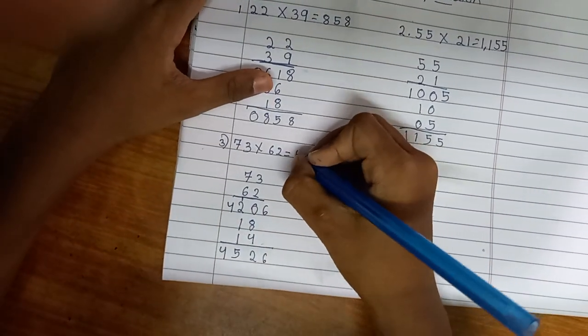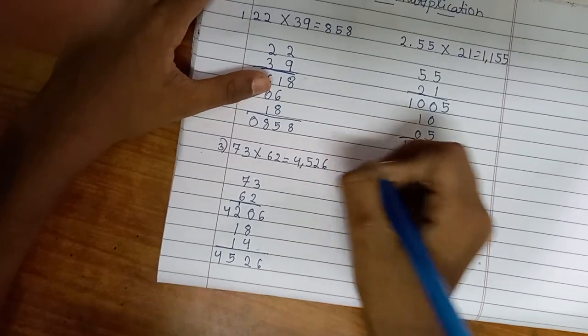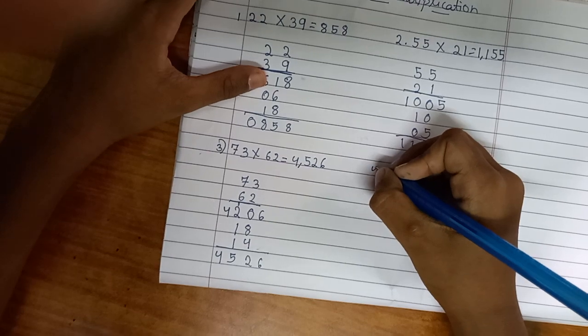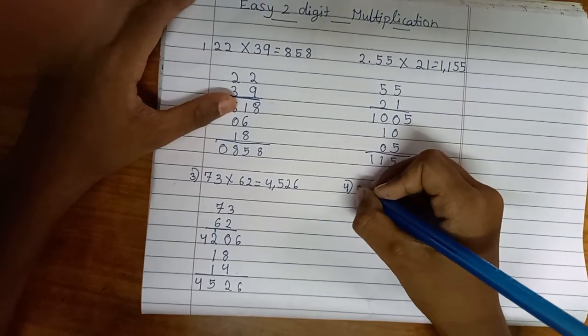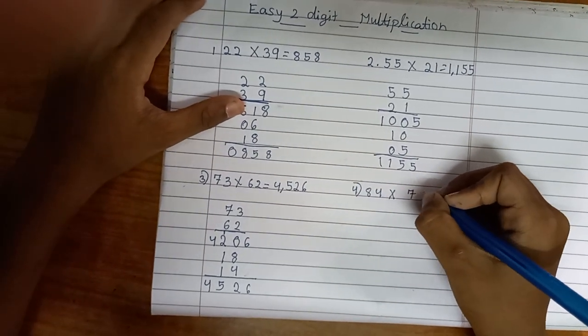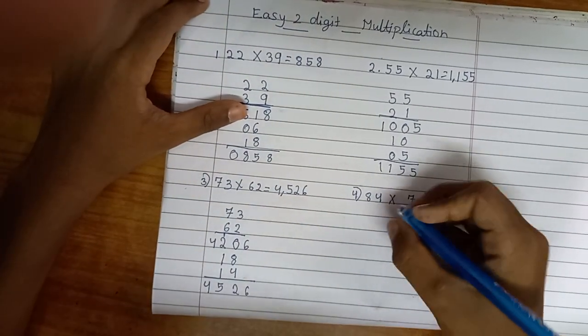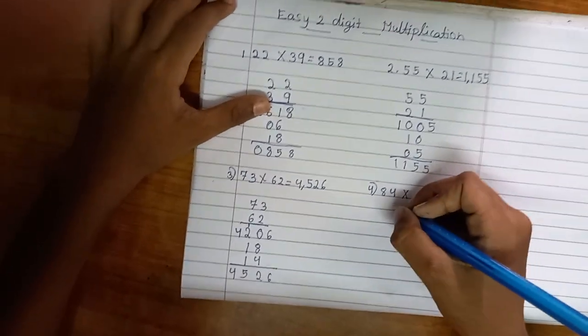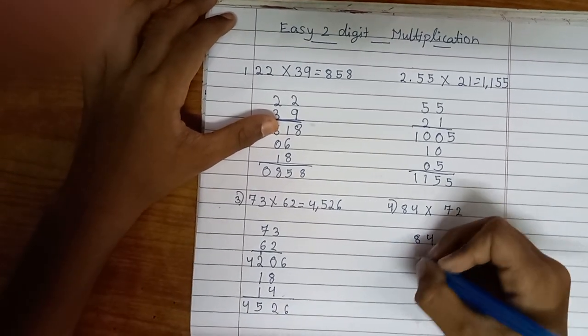We'll take the last example: 84 multiplied by 72. So I have to do 84 times 72.